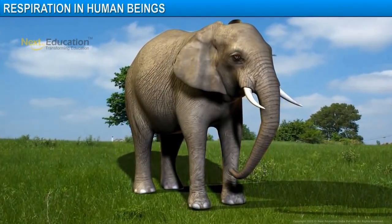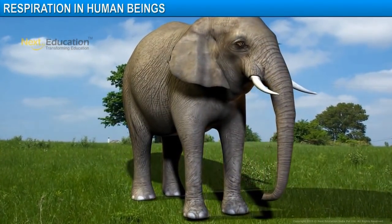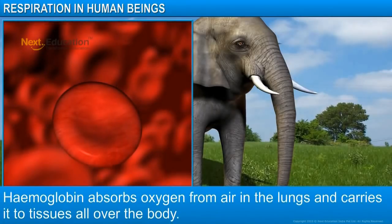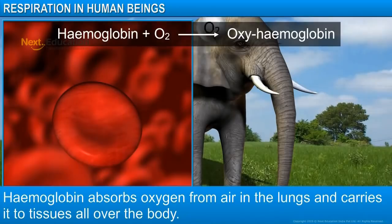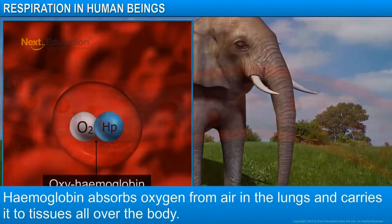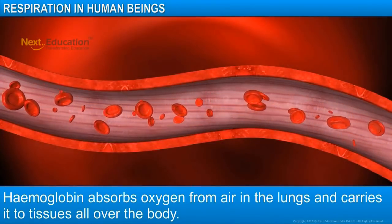In large animals, like elephants, it is difficult for oxygen to reach all parts of the body through diffusion. Hemoglobin, a respiratory pigment present in red blood cells, has high affinity for oxygen. This pigment binds with oxygen from the air in the lungs and forms oxyhemoglobin. Through oxyhemoglobin, oxygen is distributed to all the tissues in the body.